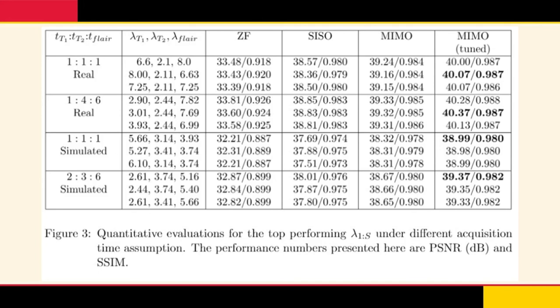In the results table, we list quantitative results for the top performing undersampling strategies. For equal acquisition time costs on real data, the top strategies flip-flop between sampling T1 or T2 FLAIR more, indicating similar importance for recovery. However, on simulated data, FLAIR is consistently sampled more than T1. This is most likely due to different dataset distributions: the BRATS dataset focuses on brain tumors, which have much better contrast on FLAIR, while the real dataset is collected on healthy subjects, so FLAIR less often contains unique information.